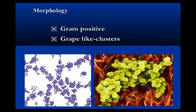Morphology means the study of forms of things — that is, the study of a particular structure or shape. As we have seen in the previous picture, Staphylococcus is arranged in grape-like clusters, which we can also see in the picture here.